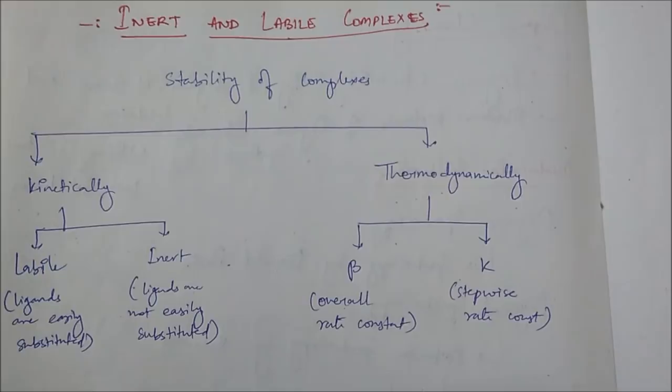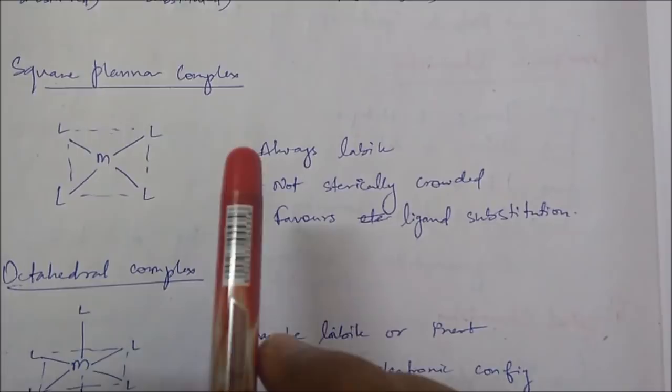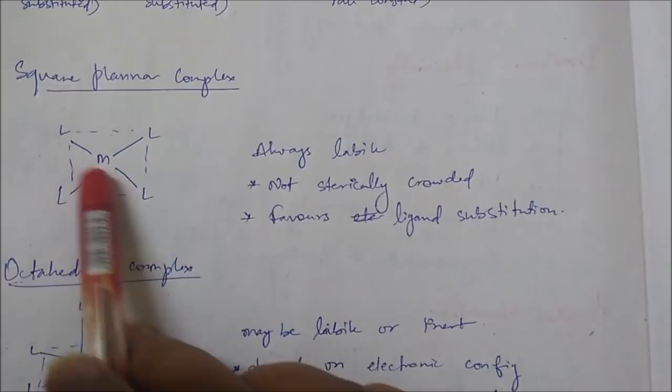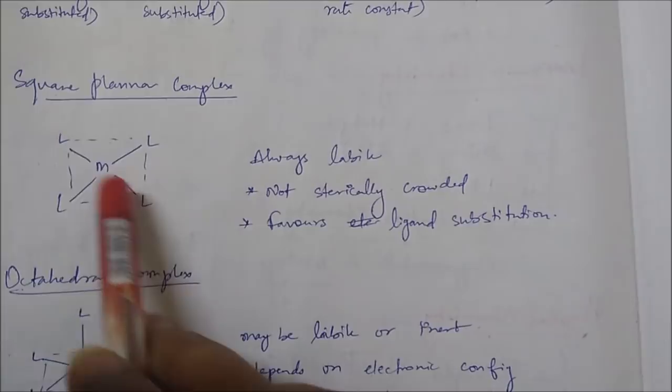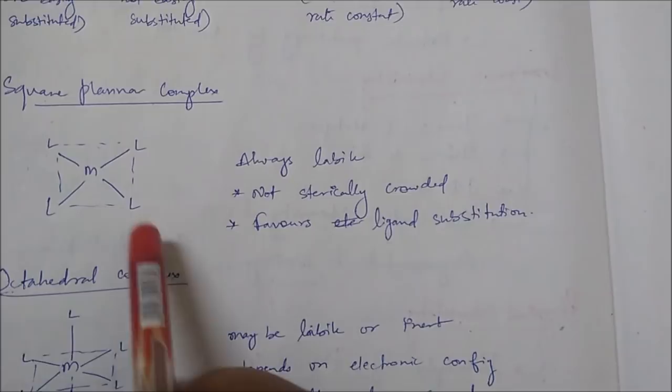Let's talk about square planar complexes. A square planar complex will always be labile. The ligands are arranged with the metal on a plane, so if you want to attack from outside, a ligand can easily come and attach from either the upside or downside of the plane. This means the complex is prone to reaction — it can undergo substitution or addition.